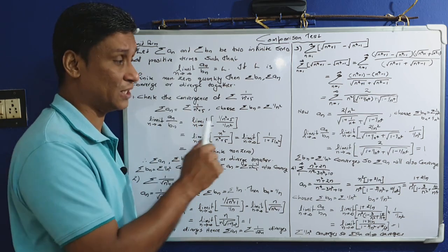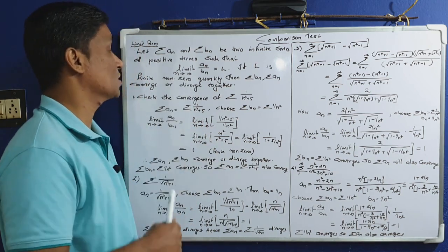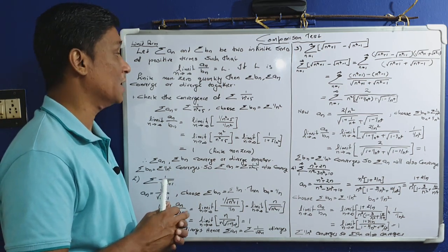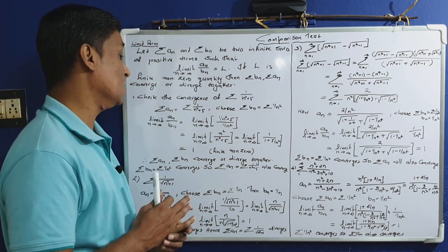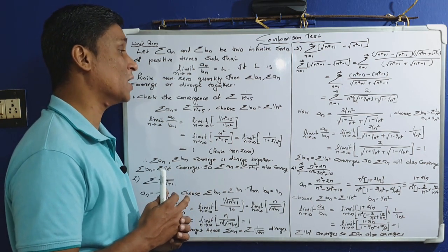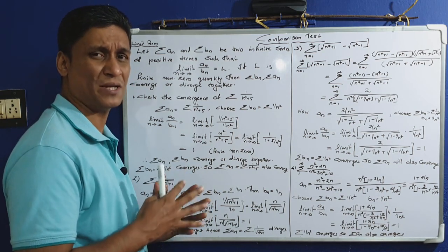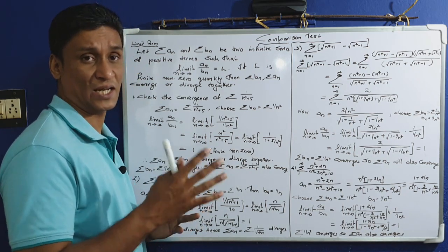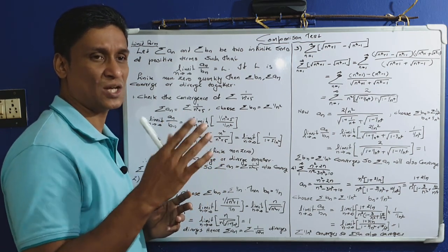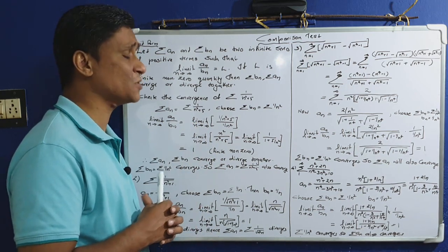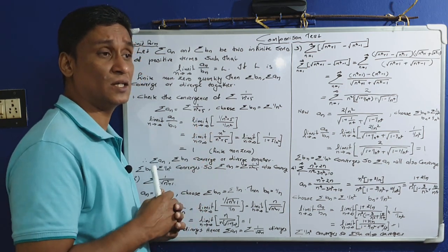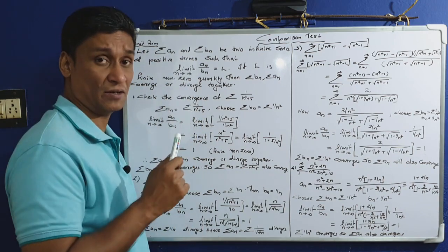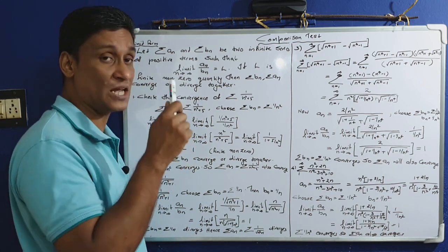What is the limit comparison test? Let sigma a_n and sigma b_n be two infinite series of positive terms such that the limit as n tends to infinity of a_n divided by b_n equals L. If L is a finite nonzero quantity, then sigma a_n and sigma b_n converge or diverge together. Both series must have only positive terms.